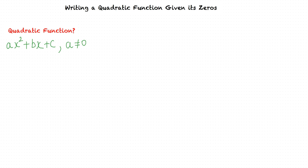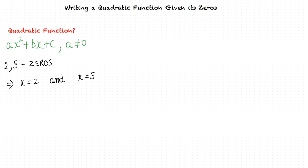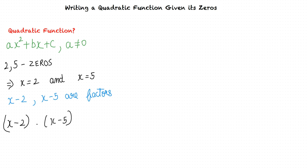Our goal is to determine the quadratic function given its zeros. Let us say that the zeros of the quadratic function are 2 and 5. It is given that x equals 2 and x equals 5 are the zeros, which means that x minus 2 and x minus 5 are the factors. The quadratic function can be expressed as the product of its factors: x minus 2 times x minus 5.